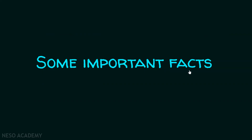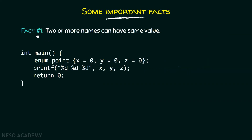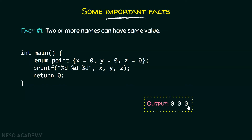There are some important facts related to enums. Fact number one: two or more names can have the same value. Here we have an enum point which consists of names x, y, and z, and we are initializing them all with the same value, that is zero. When we print them on the screen, the output is zero, zero, zero. It is possible to assign the same values to all the names.